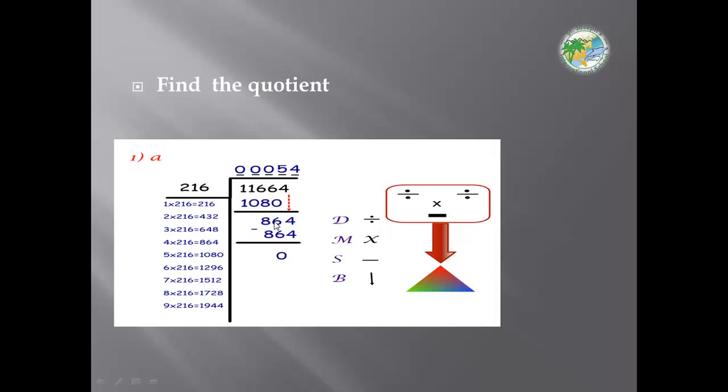After you subtract, 6 minus 0 is 6, 6 minus 8 we can't, borrow 1. 16 minus 8 equals 8. Bring it down your digit number, 864.